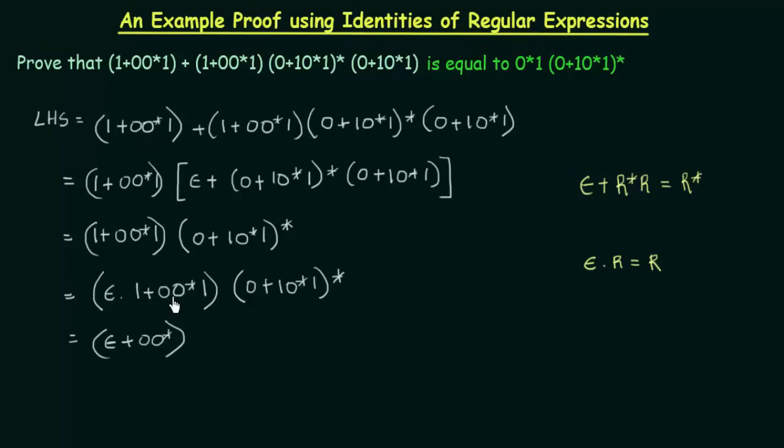So the only thing that is left is 1. So I am left with 1. And this one, let me just copy it down as it was: (0+10*1)*.